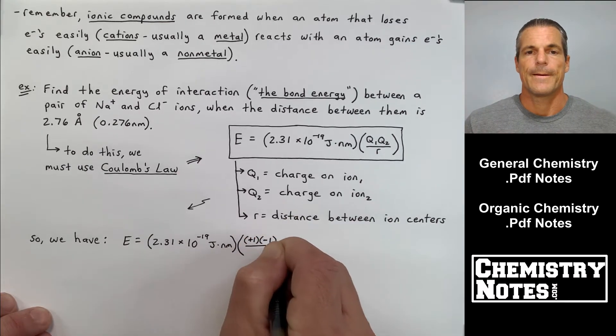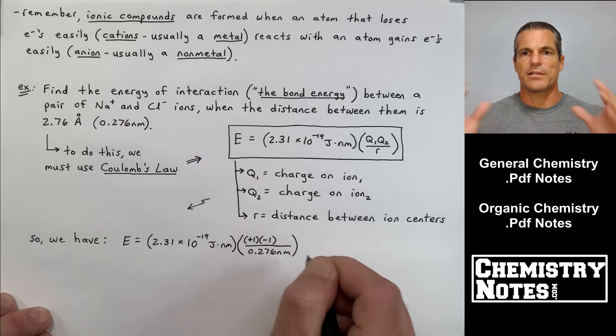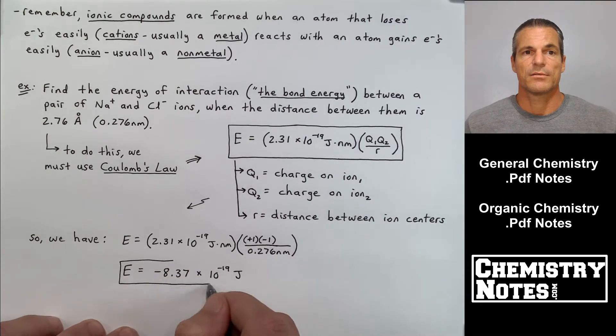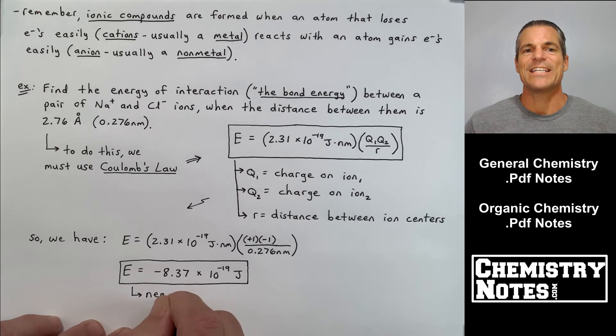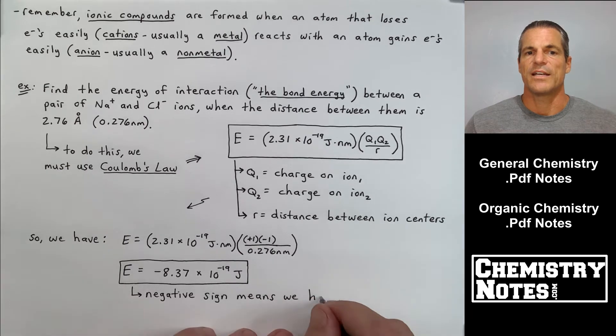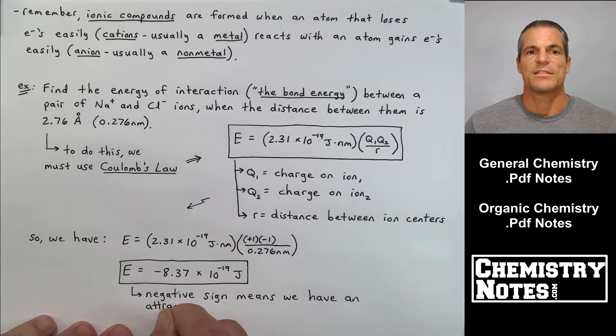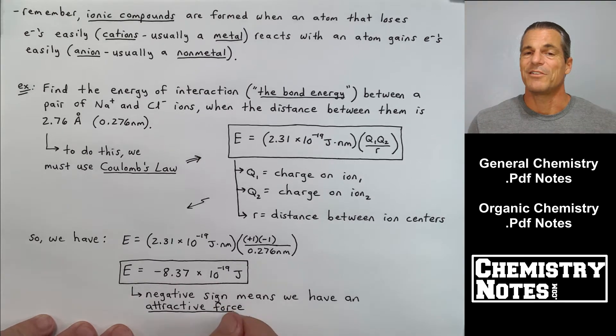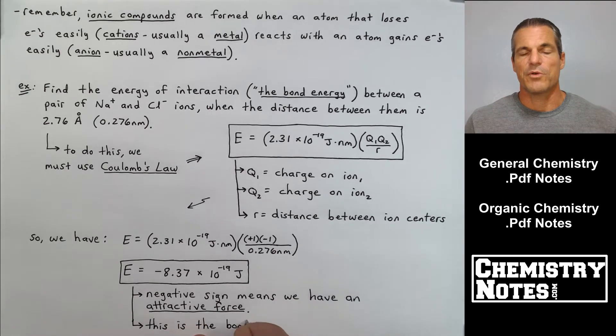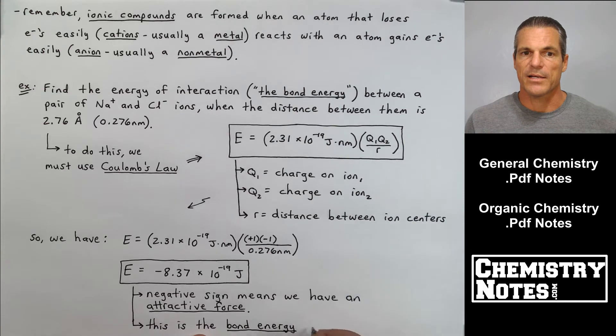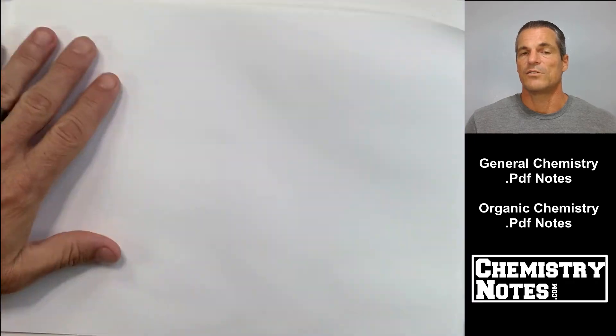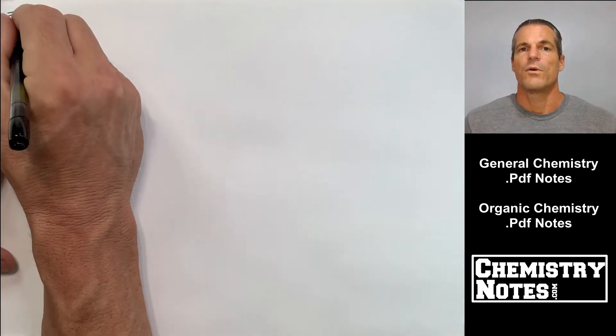You can't really calculate the radius because of the undefined outer limits of an ion or atom, which we talked about in Section 7. The energy here is -8.37 × 10^-19 joules. The negative sign means we have an attractive force. We know that a plus and a minus are going to attract—Na+ attracts Cl- to make sodium chloride, an ionic compound. That energy is the bond energy for NaCl.